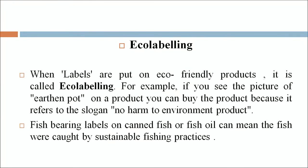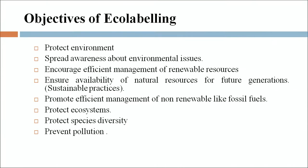Eco-labeling: when labels are put on eco-friendly products, it is called eco-labeling. For example, if you see the picture of an earthen pot on a product, you can buy it because it refers to the slogan 'no harm to environment.' Fish-bearing labels on canned fish or fish oil can mean the fish were caught by sustainable fishing practices. Objectives of eco-labeling include: protect environment, spread awareness about environmental issues, increase efficient management of renewable resources, ensure availability of natural resources for future generations, promote efficient management of non-renewables like fossil fuels, protect ecosystems, protect species diversity, and prevent pollution.